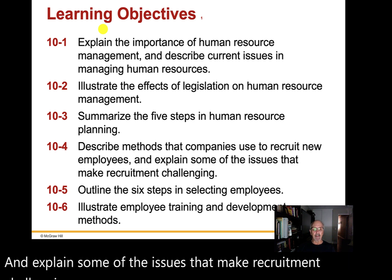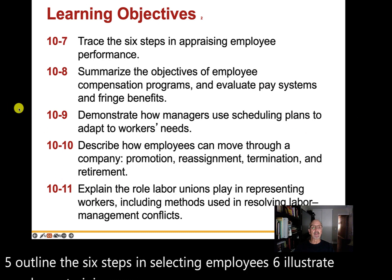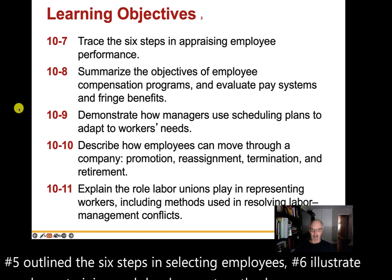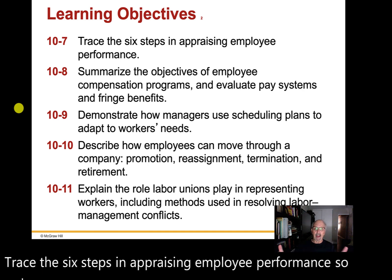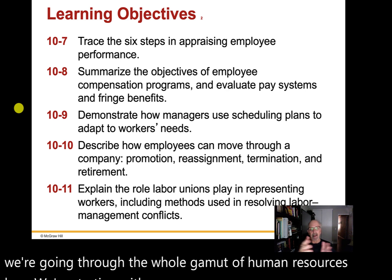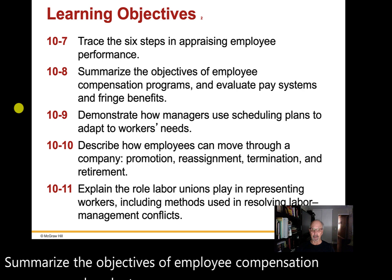Number five: outline the six steps in selecting employees. Number six: illustrate employee training and development methods. Trace the six steps in appraising employee performance — so we're going through the whole gamut of human resources, starting with employment, now doing employee performance. Summarize the objectives of employee compensation programs and evaluate pay systems and fringe benefits.